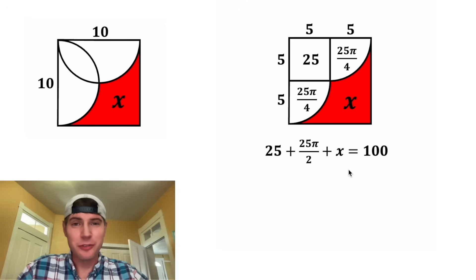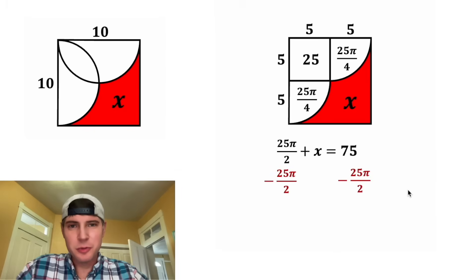Now we just have to solve for x. We can subtract 25 from both sides. These two will cancel each other out. 100 minus 25 is 75. Then we can subtract 25π over 2 from both sides. On the left-hand side, these will cancel out. On the right-hand side, we'll have 75 minus 25π over 2.